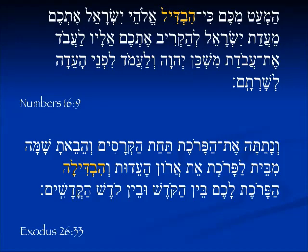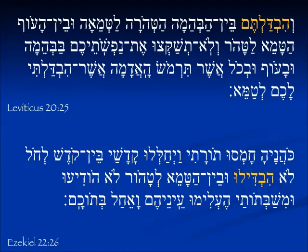In Exodus 26:33, we see a female form. Hivdila is the verb. The subject is the parochet, which is the curtain which hangs between the holy place and the most holy place. Parochet is feminine. And so it is dividing, as it says, 'ben ha'kodesh uven kodesh ha'kodeshim,' between the holy and between the most holy, the holy of holies. In the second person plural, we don't see the yud. In Leviticus 20:25, it's talking about separating out the animals which are clean and the animals which are unclean. God commands us to make a separation.